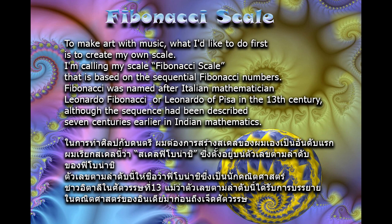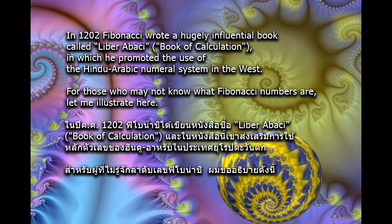Fibonacci was named after Italian mathematician Leonardo Fibonacci, or Leonardo of Pisa, in the 13th century. Although the sequence had been described seven centuries earlier in Indian mathematics, in 1202, Fibonacci wrote a hugely influential book called Liber Abaci — Book of Calculation — in which he promoted the use of the Hindu-Arabic numeral system in the West.